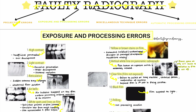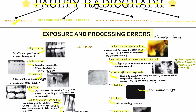Starting with the main topic: exposure and processing errors. First, you expose the patient to radiation. The image you get on an IOPA film at that stage is known as the latent image — an invisible form of the image. To get the final visible form, you need to go through processing steps: developing, rinsing the developer, fixing, final rinse with water, and drying.